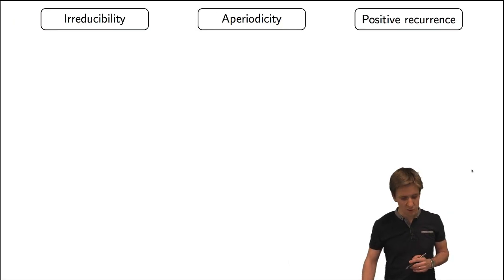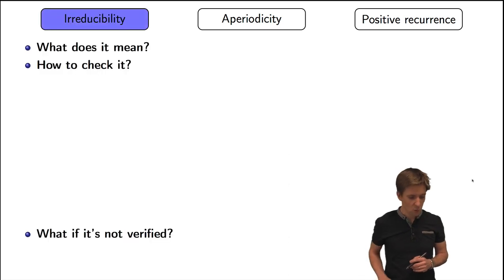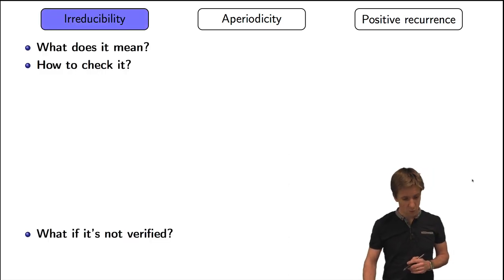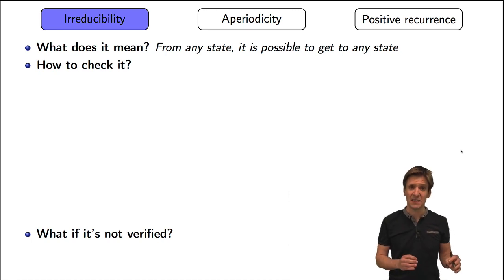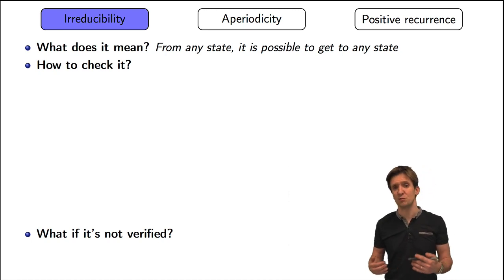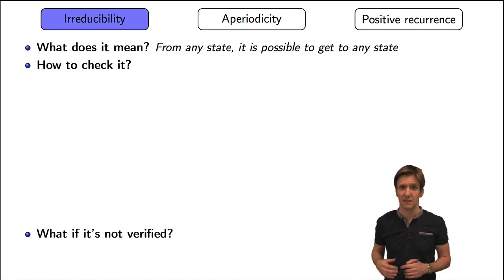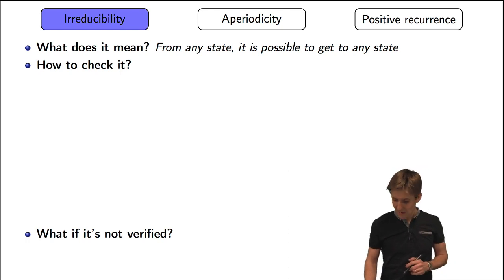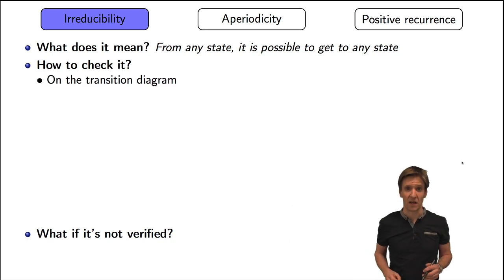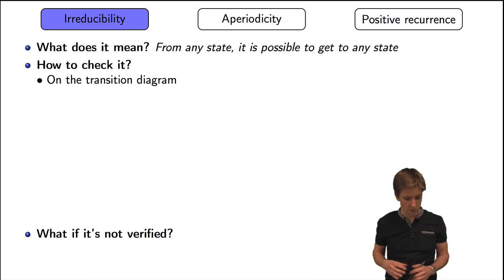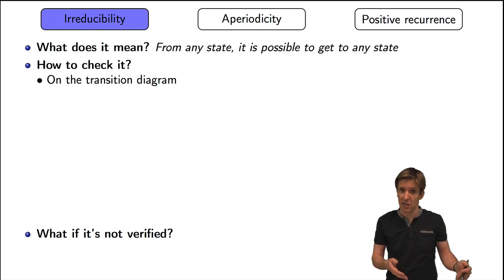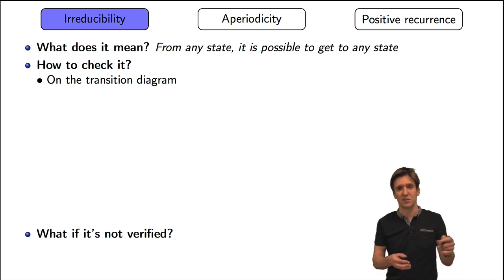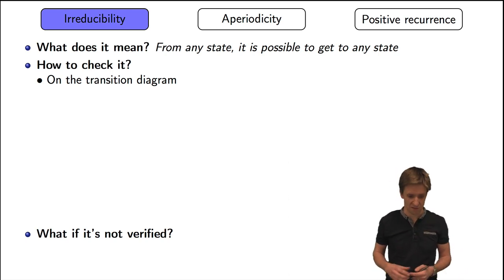So let's start with irreducibility. What does that mean? It means that from any state, I should be able to reach any other state in the chain, possibly in several steps. How can I check that? I can use the transition diagram, take any two states, and check whether I can find a path from one to the other, using only transitions that have a strictly positive probability.